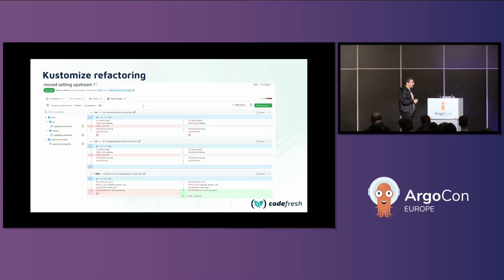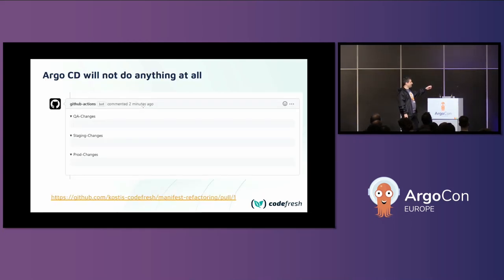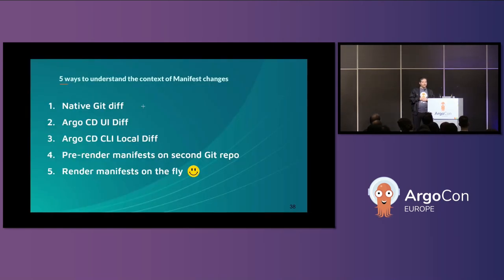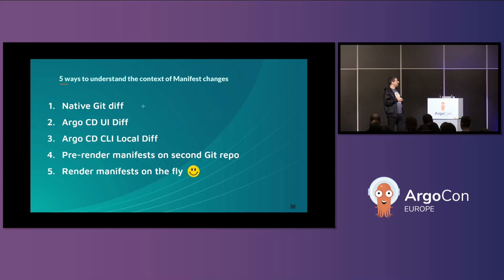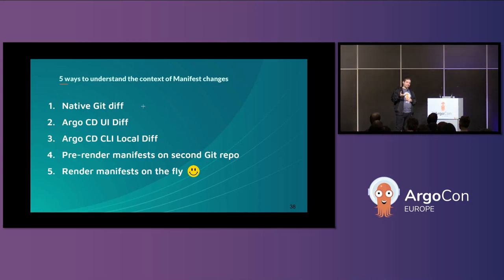For me, knowing what hasn't changed is even more important than knowing what has changed. The smart diff comment is attached to the pull request — the URL is there, everything I've shown is not theoretical, you can find the code. So here's a summary of the solutions: native git diff is very naive and doesn't give enough context — don't use it; Argo CD UI diff is fine but very late in the process and loses autosync; CLI `--local` is okay for local experimentation but not production; pre-rendering on a second git repo works but is super complex with many moving parts; and my favorite — render manifests on the fly and attach as a PR comment — simple, works for Argo CD and Flux, one git repo, and tells you both what has and hasn't changed.